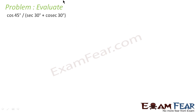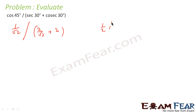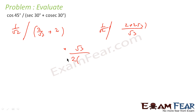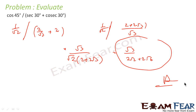We have to find cos 45 divided by (sec 30 + cos 30). Just apply the formula: cos 45 is 1 by root 2, sec 30 is 2 by root 3, and cos 30 is root 3 by 2. Expanding this, you get root 3 by 2 multiplied by 1 by root 2, into (2 + 2 root 3), which comes out to be root 6. Just solve it step by step.